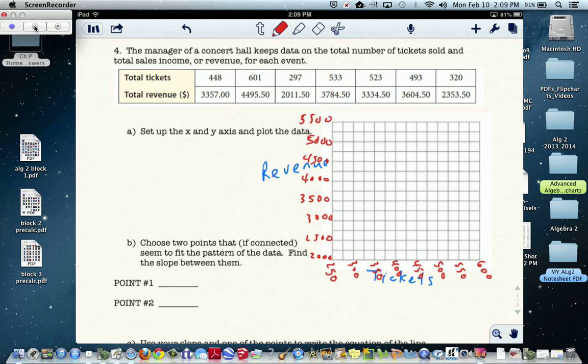I used tickets. Those are my x values, and I went by 25. So I wrote down 250, skipped the 275, 300. So every 25 on the line. And then for the revenue on my y axis, I used starting at 2,000, I went up by 500.